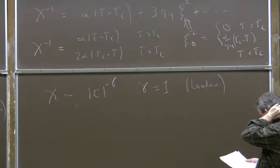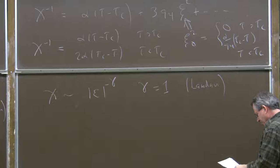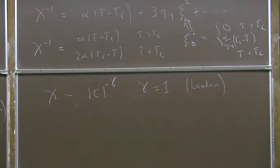There's also a prediction about the critical isotherm. Right at the critical temperature, the free energy is a constant plus a quartic term according to Landau theory. So when tau equals tau_c, the equation relating the applied field and the order parameter on that critical isotherm is that lambda, the derivative of free energy with respect to psi, goes like psi cubed plus higher order.